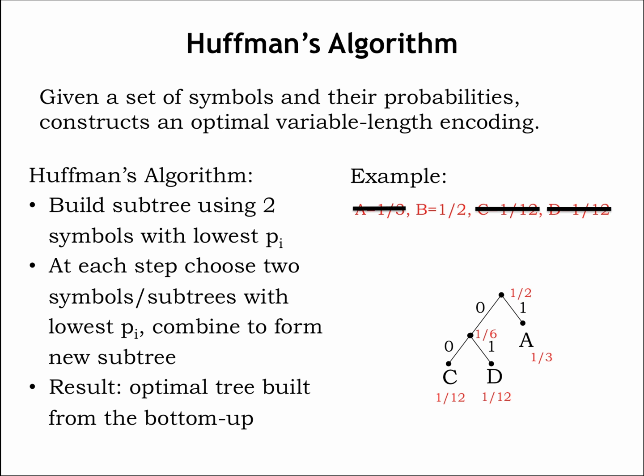On the final step, we only have two choices left, B and the ACD subtree, which we combine in a new subtree whose root then becomes the root of the tree representing the optimal variable length code.